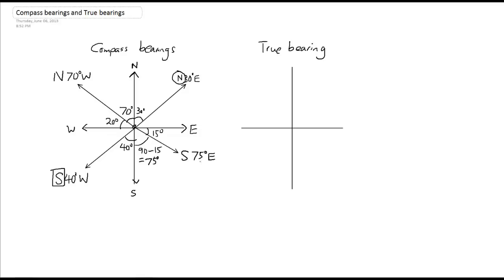Alright, every direction has to start with either north or south, and then the angle, and then either east or west. Let's talk about true bearing, which is easier than compass bearing because everything is measured from the north.